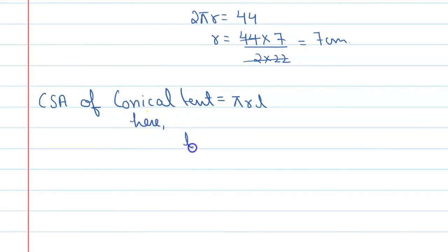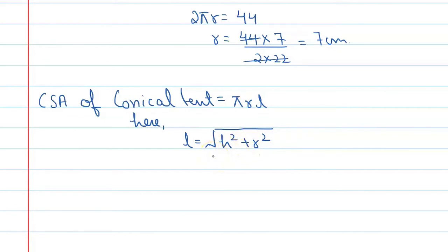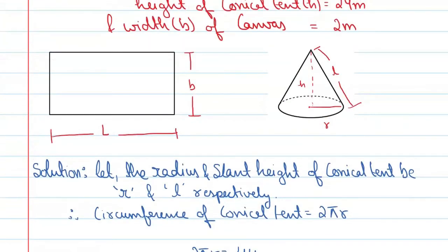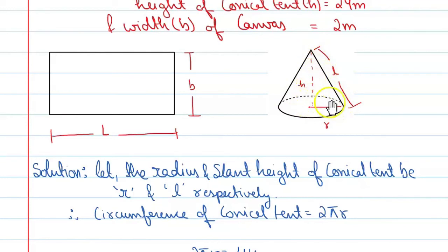The slant height, small l, is equal to the square root of h squared plus r squared. Looking at our figure, the conical tent has a vertical height, a radius, and a slant height forming a right-angled triangle. Therefore, l squared equals the sum of the squares of height and radius.